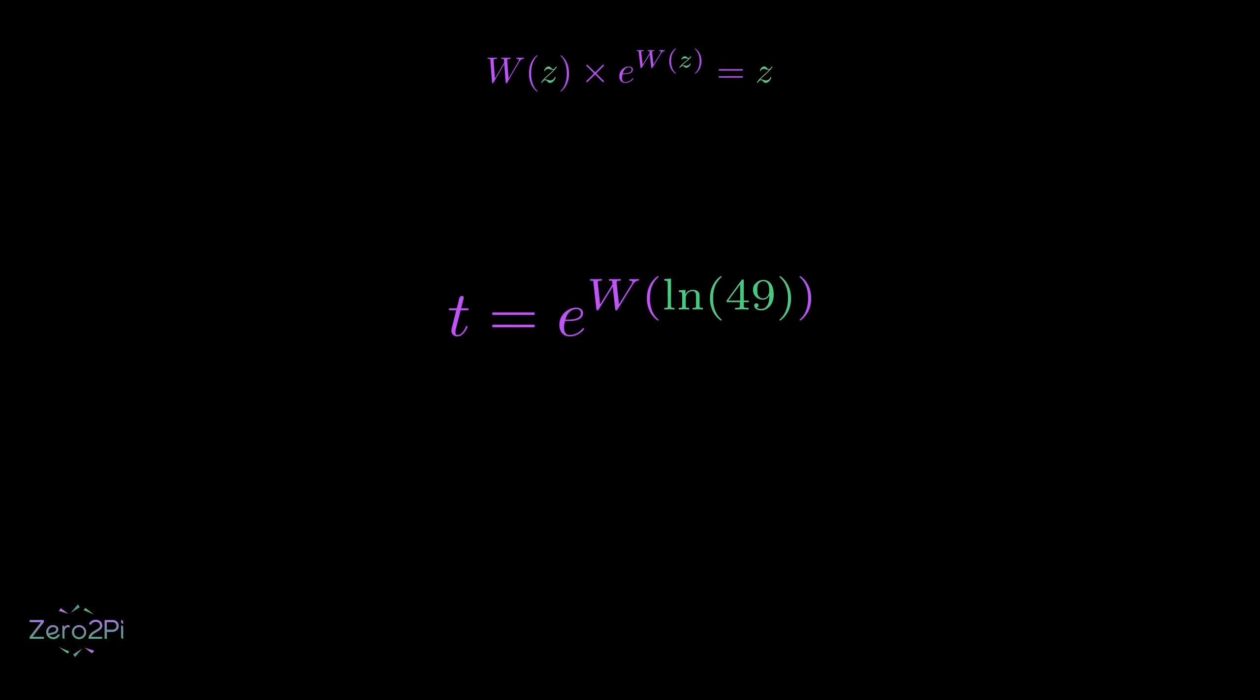One more thing. We can also write above expression like this. That means we can also calculate t by dividing the natural log of 49 by the Lambert W of natural log of 49. And this is our final solution.